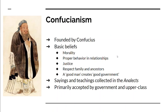Along with this is Confucius and Confucianism. Confucius lived from 551 to 479 BC. He was a teacher, and what started as a philosophy has in many ways become a religion. The basics of Confucian teachings are morality — being a good, just person — and proper behavior in relationships. In Chinese culture, women respect men, men respect elders, elders respect ancestors, and everybody respects the king and the government. There's justice and following the laws, respect for those that came before you, and overall you could say it's the concept that a good man creates good government.